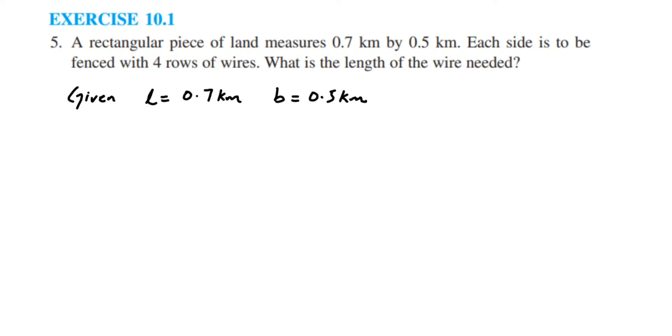We have to find out the perimeter of the field or perimeter of the land. Perimeter is equal to 2 into length plus breadth. We are going to substitute the values. This is equal to 2 into 0.7 plus 0.5. 0.7 plus 0.5 will give us 1.2. So, 2 into 1.2. When you multiply 2 and 1.2, we will get 2.4. So, 2.4 km.